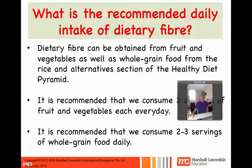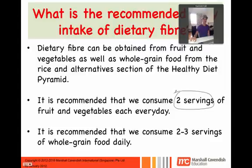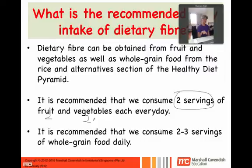How much dietary fiber should you take? We take our recommendations from the Singapore Healthy Diet Pyramid. From the pyramid, you get dietary fiber from two sections: the fruit and vegetables section, where you're encouraged to have two servings of fruit and two servings of vegetables each per day. Out of the rice and alternatives food group, you're recommended to have six to seven servings, of which two to three should be whole grain food.